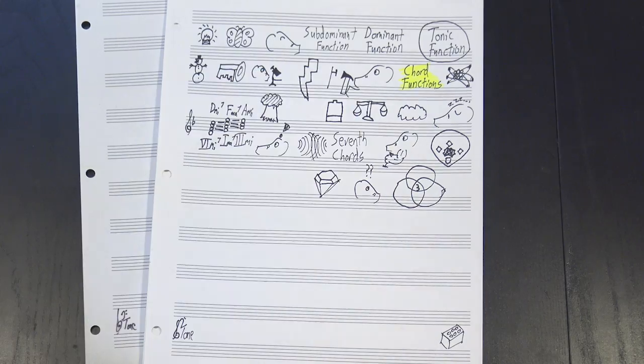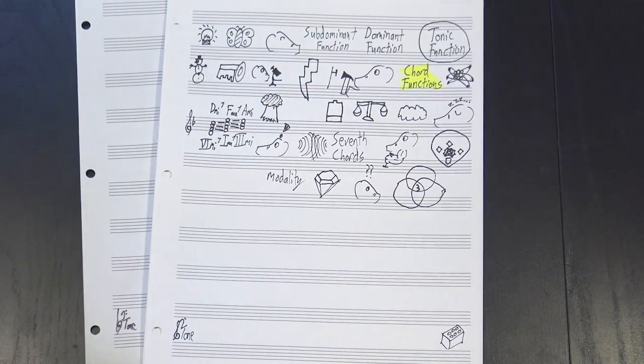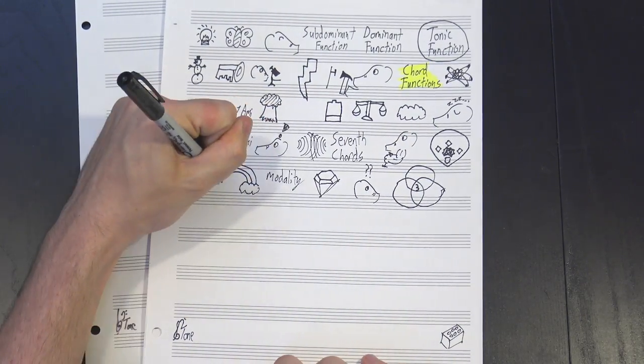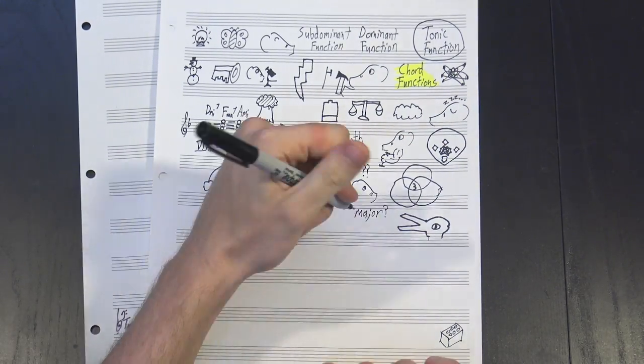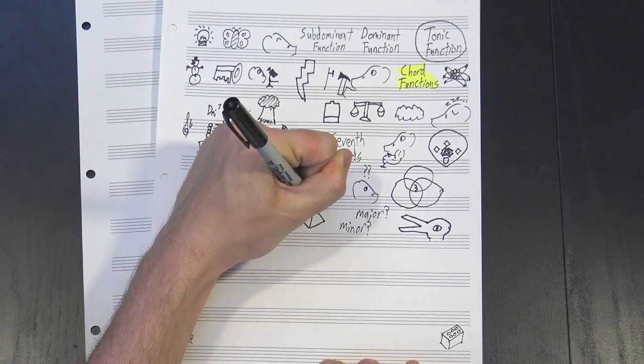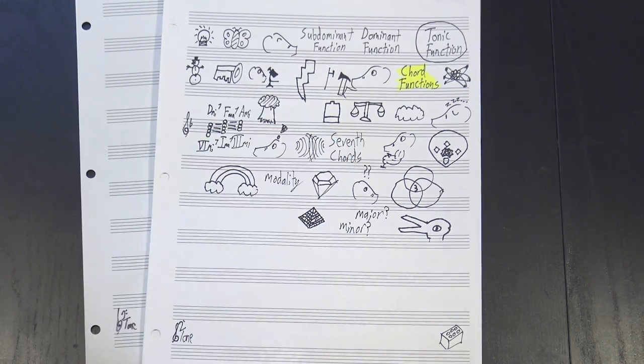But the 3rd degree plays a critical role in defining what's called the modality of the scale, which is what gives the scale its overall color. Without the 3rd degree, you get ambiguity. It's not clear whether it's major or minor, and that, it would appear, is a large part of what gives tonic function its strong sense of rest.